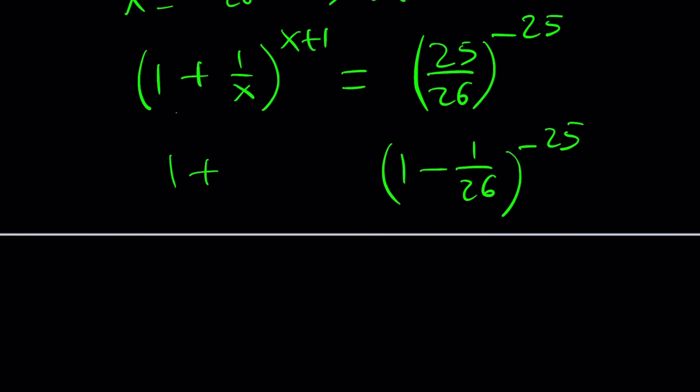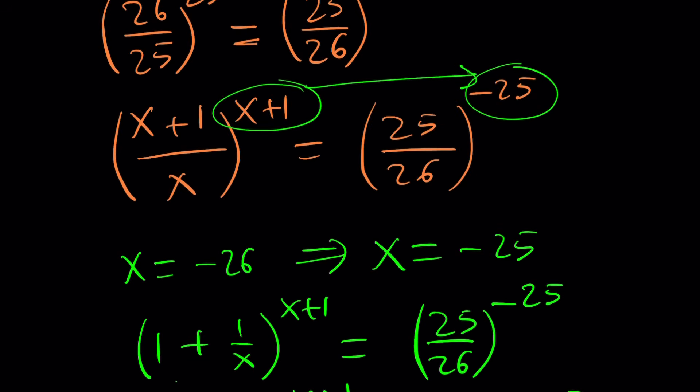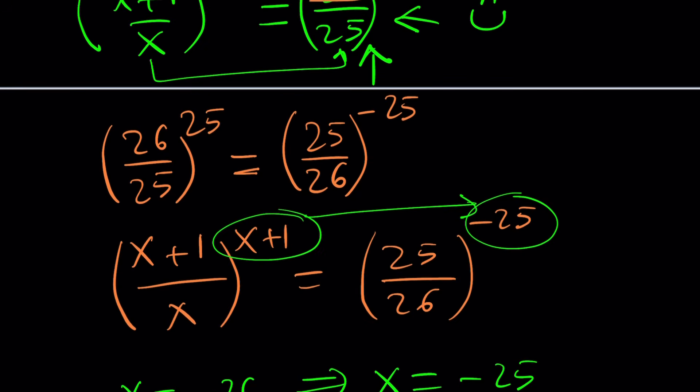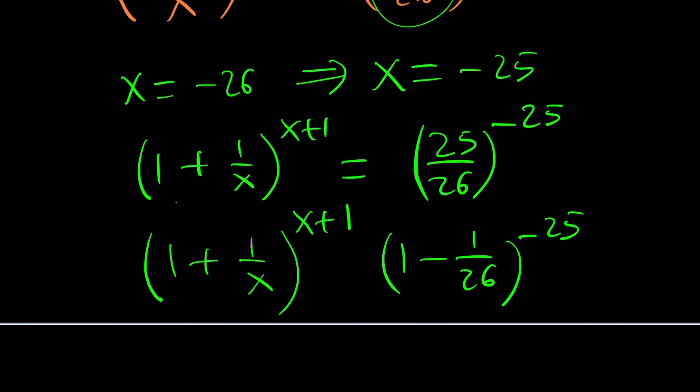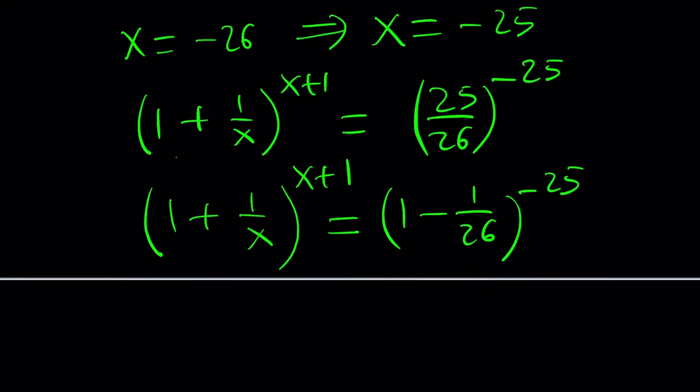So now, we're going to keep the left-hand side. And the right-hand side, let me explain what I did one more time. I flipped it so that I could get a negative exponent. And then I got a fraction that is less than 1, like 25/26. And then I wrote it as 1 - 1/26. Because it's less than 1, I can do that. And now these are supposed to be equal.